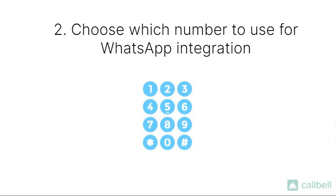The WhatsApp approval might take up to 24 hours, at the end of which the member of our team who is helping you through this process will send over, via SMS or via phone call, the verification code to the number you have chosen to integrate. We'd like to remind you that after completing the verification of your phone number on the WhatsApp Business API, it won't be possible to revert the process and install the same phone number on a standard WhatsApp account.